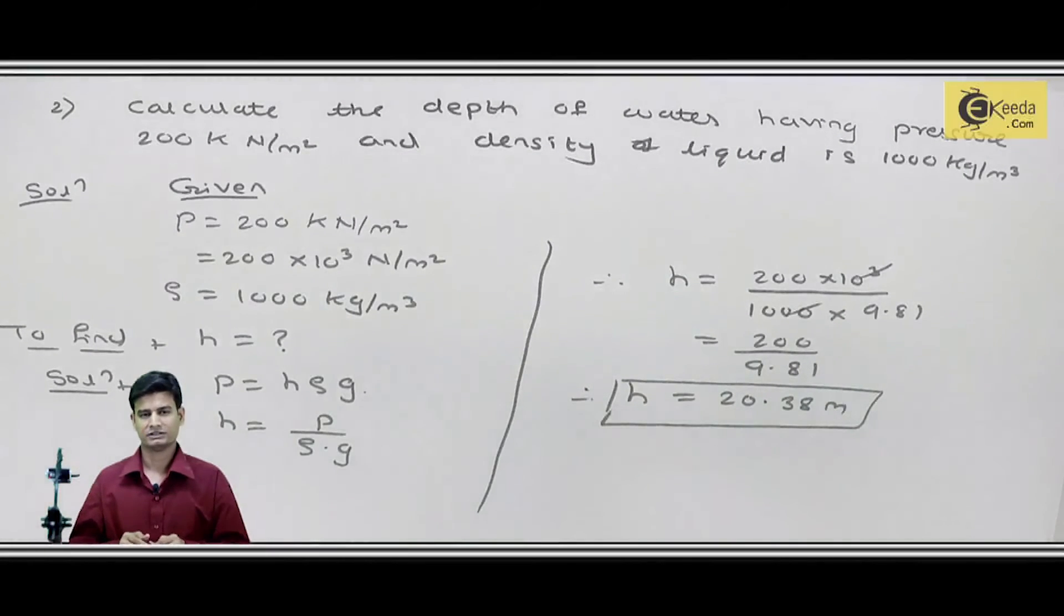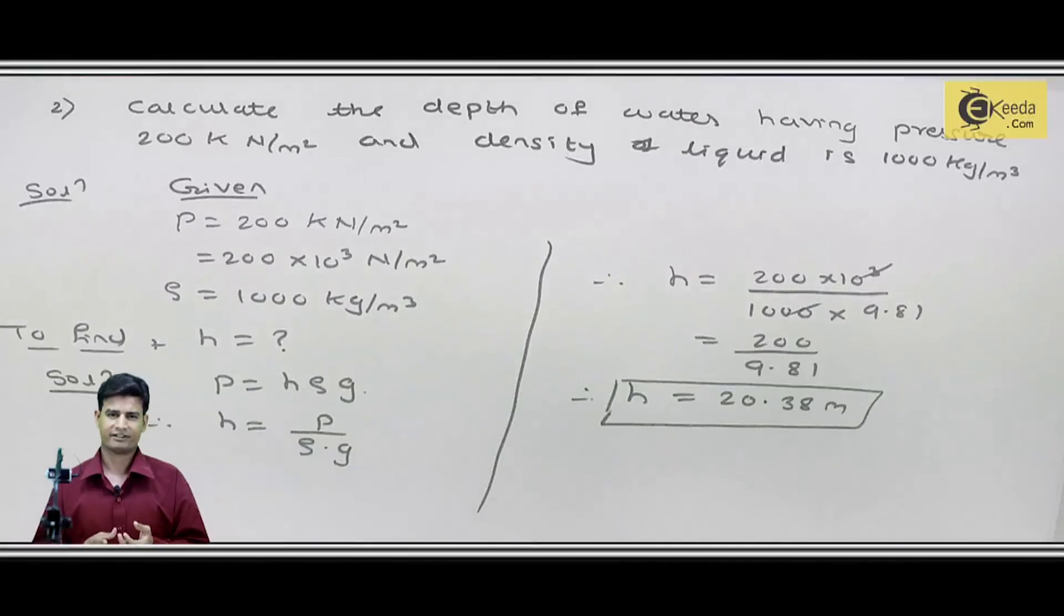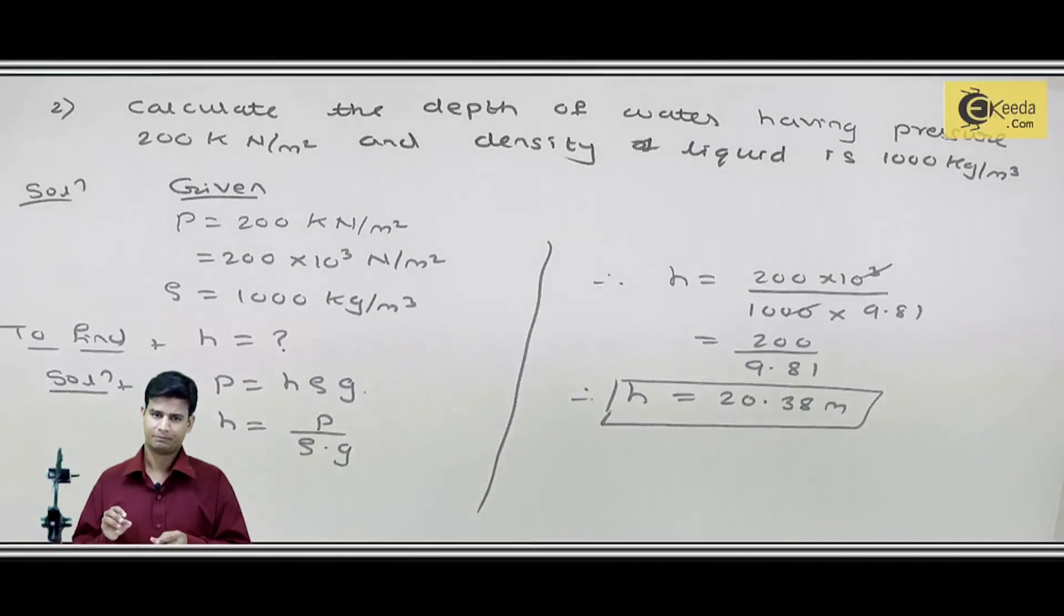In this calculation, to find depth of water from given pressure and density, I used the fixed gravity value of 9.81, rearranged the formula to isolate height, applied the values, and found the final answer: height or depth of water is 20.38 meters.